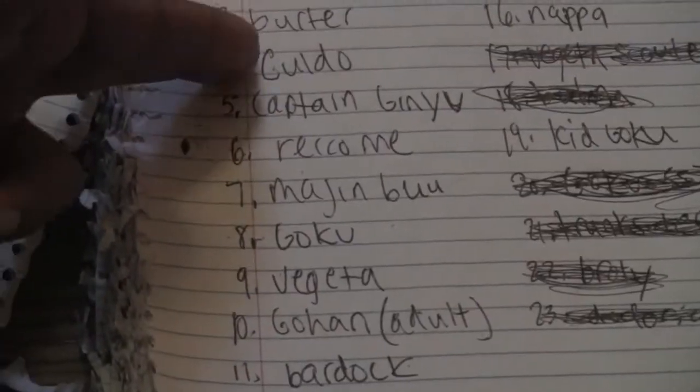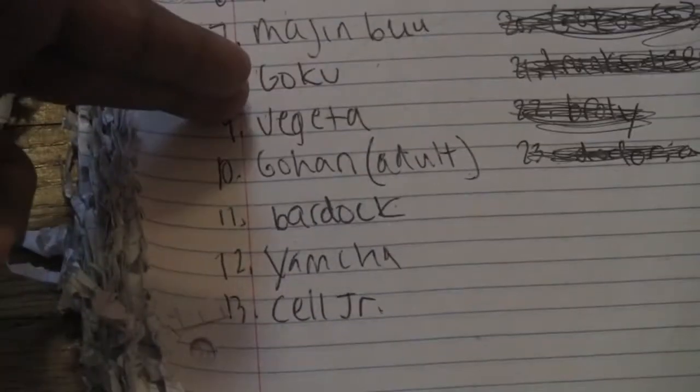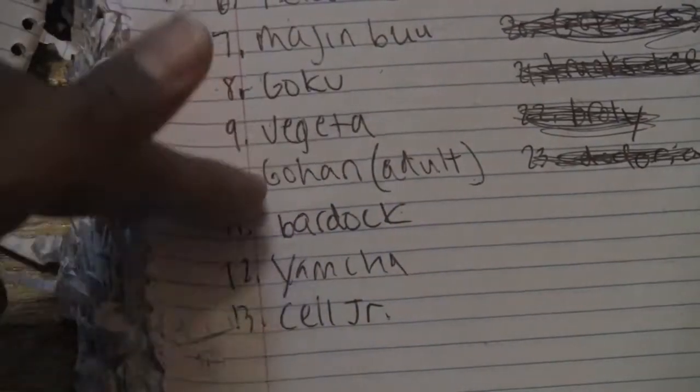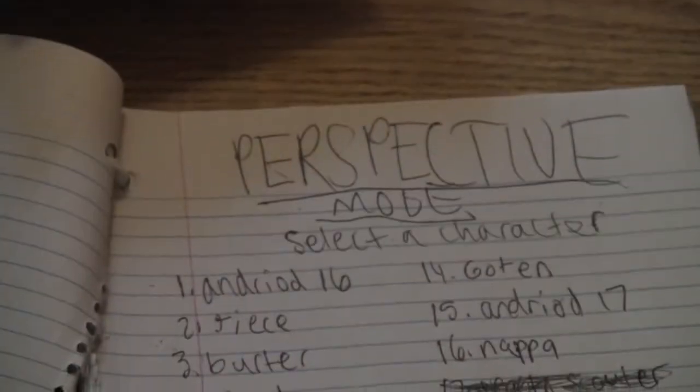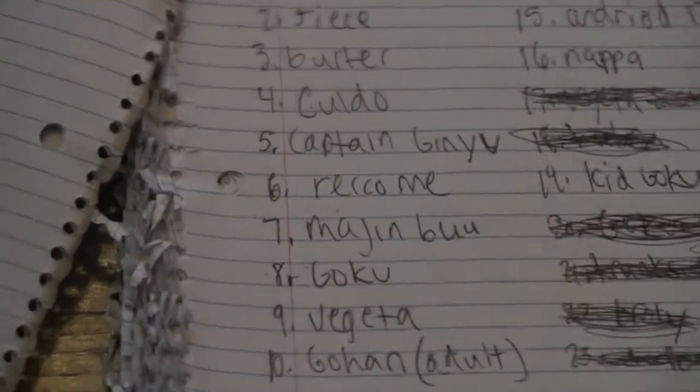Android 16, Jice, Burder, Guldo, Captain Ginyu, so the Ginyu Force, Raku, Majin Buu, Goku, Vegeta, Gohan with Adult. So, Bardock, Yamcha, Cell Jr., Goten, Android 17, and Nappa are your perspectives.